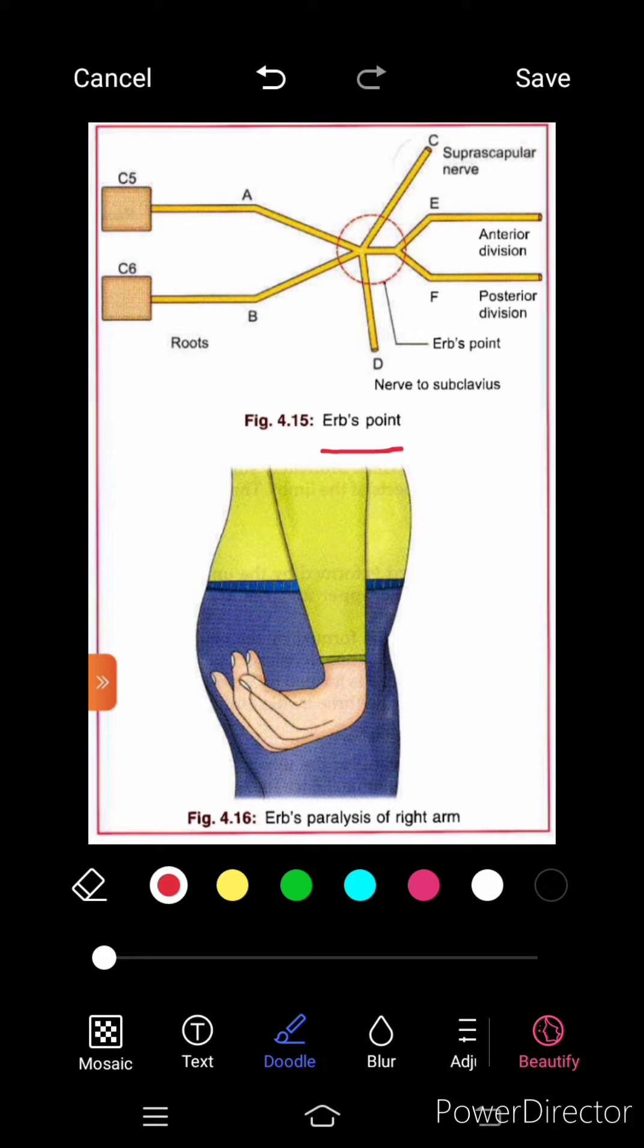Erb's point is the junction of the upper trunk of the brachial plexus where six nerves meet. The nerve roots involved in Erb's paralysis are C5 mainly and partly C6. Injury to the upper trunk causes Erb's paralysis.